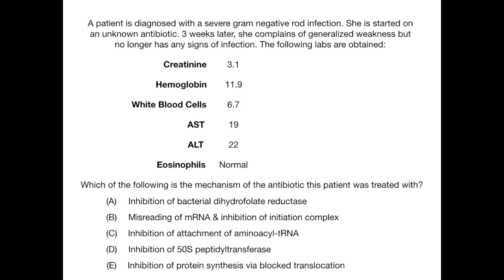The following labs are obtained: Creatinine 3.1, Hemoglobin 11.9, White blood cells 6.7, AST 19, ALT 22. Eosinophils are normal.